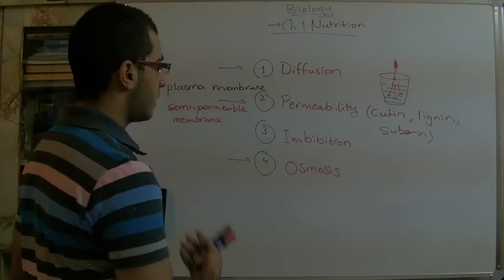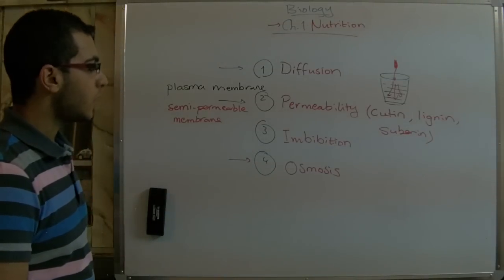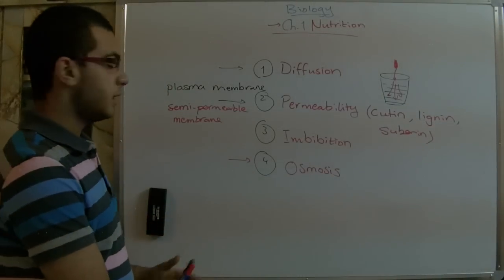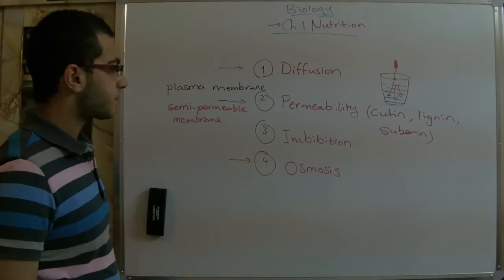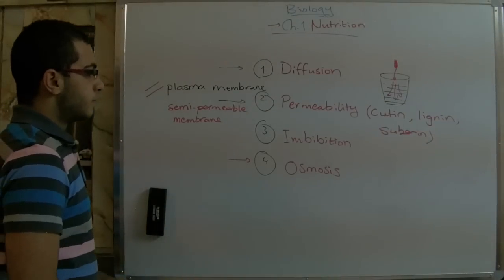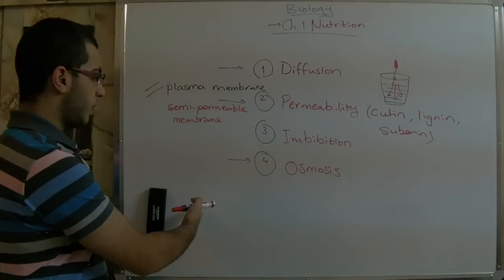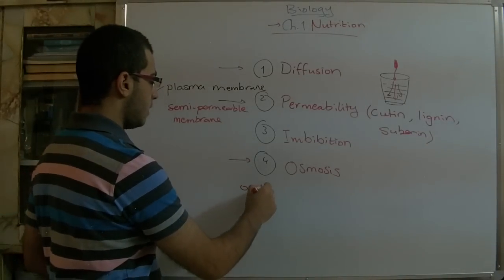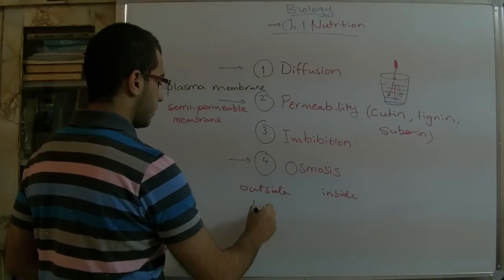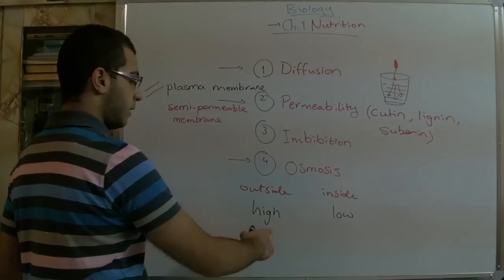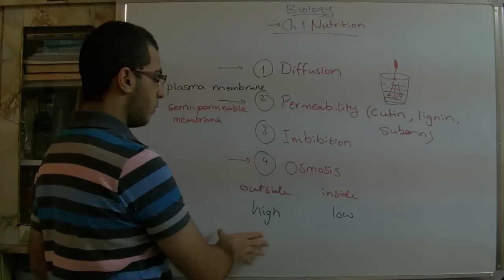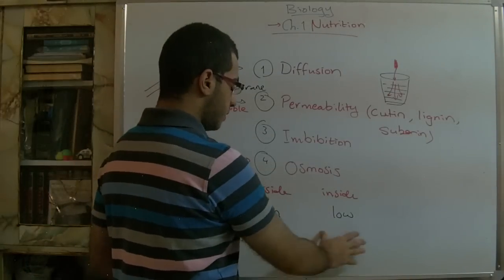The last method by which elements are transferred from the outside medium to the inside is called osmosis. Osmosis means the transfer of water molecules from a highly concentrated medium — the soil medium outside — to a low concentrated one inside the root cell, by means of a semipermeable membrane, which is the plasma membrane. The difference between the highly concentrated medium outside and the low concentrated medium inside is called osmotic pressure.